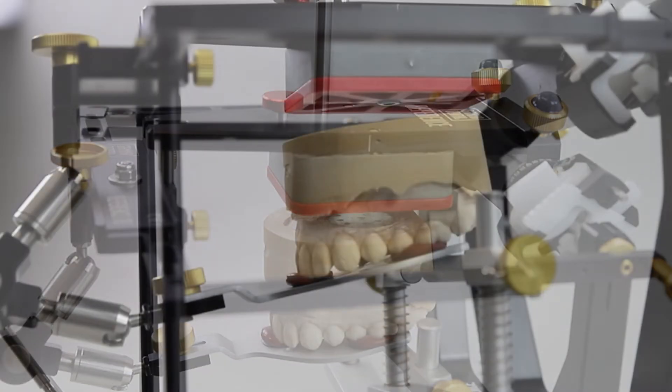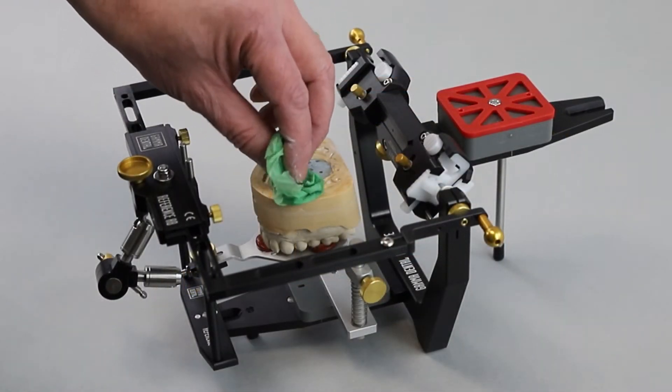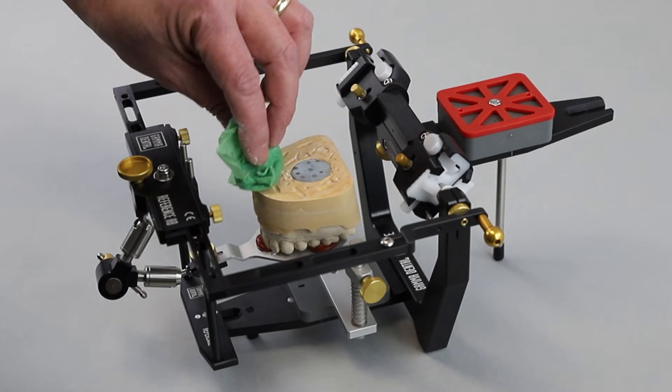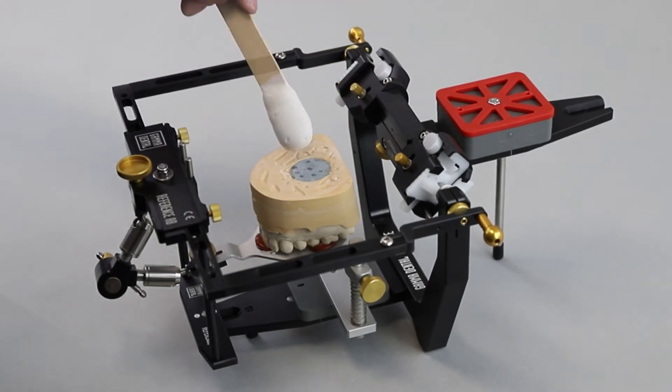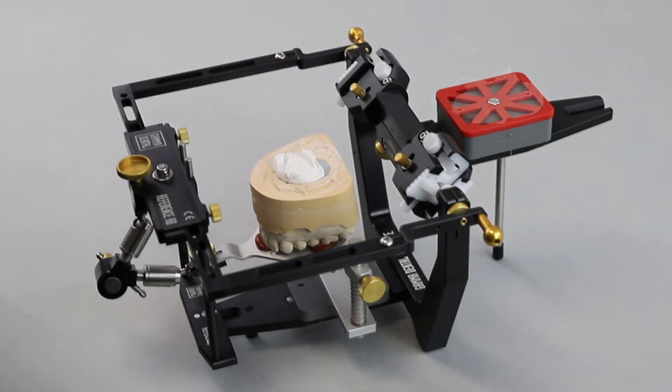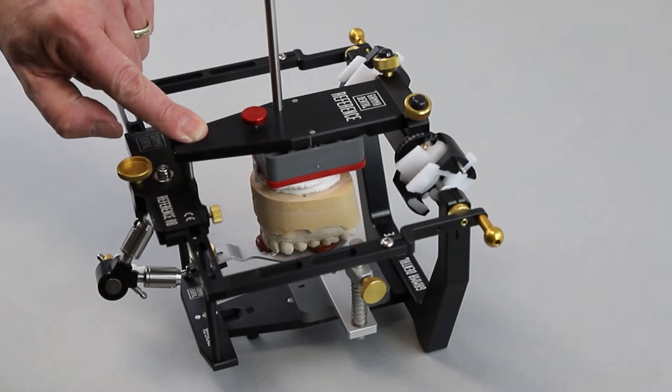This will minimize the distortion effects of plaster expansion. Moisten the model and apply the mounting plaster to the model and the mounting plate, then close the articulator. Allow the plaster to harden according to the manufacturer's instructions.